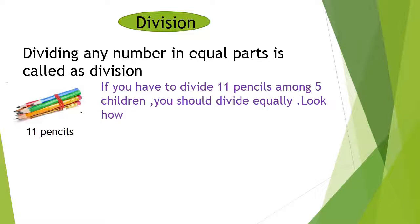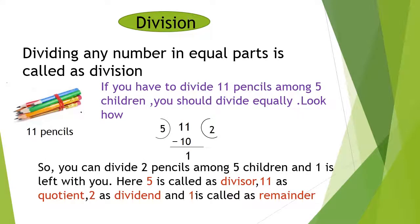But how? Look here, if we divide 11 by 5, five times two equals ten. After subtracting, we get 1 as remainder. So you can give two pencils to each of the five children, and one is left with you.